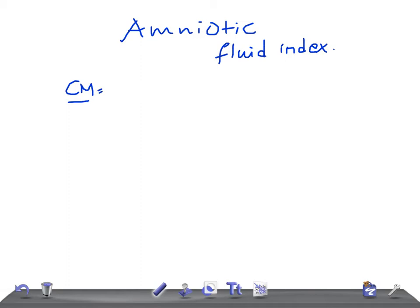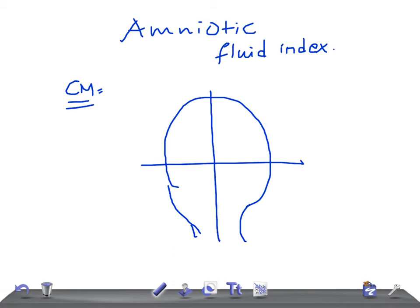How is it measured? The pregnant uterus is divided into four quadrants. With the help of ultrasound ultrasonography, the gynecologist measures each quadrant.